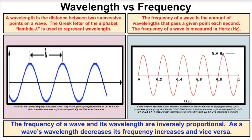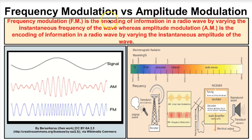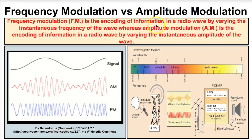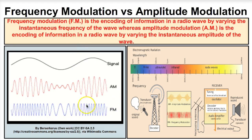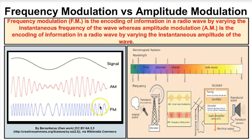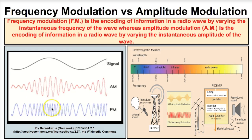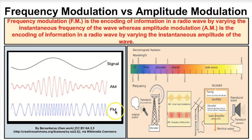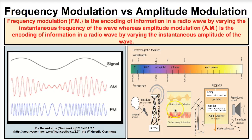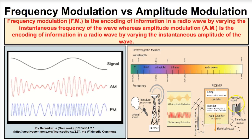Now let's look at AM versus FM radio waves — frequency modulation versus amplitude modulation. Frequency modulation, or FM, is the encoding of information in a radio wave by varying the instantaneous frequency. Looking at an FM wave, the amplitude stays the same while the frequency changes over time — longer wavelengths mean lower frequency, shorter wavelengths mean higher frequency. FM stations change the frequency of radio waves, broadcast through their antenna, and your receiver decodes it into sound.